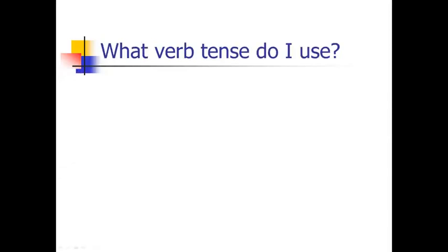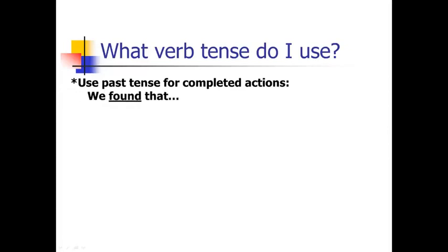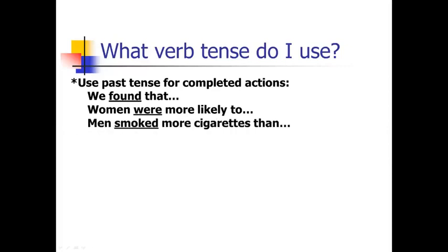Another thing that often confuses students writing a scientific manuscript for the first time is what verb tense to use. It's actually pretty straightforward — you just need to know the rules. Use the past tense when talking about completed actions: 'We found that...' — you've already done the study. 'The women in our study were more likely to...' — you've already measured them. 'Men smoked more cigarettes' or 'the average reaction time was' — all completed because your experiment is completed.